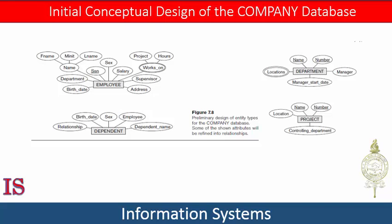Each entity type in the database is described by its name and its attributes. The collection of all entities of a particular entity type in the database at any point in time is called an entity set, and is usually referred to by using the same name as the entity type. An entity type is represented in the ER diagram as a rectangular box enclosing the entity type name — here you see the employee entity, the department entity, and the dependent entity.